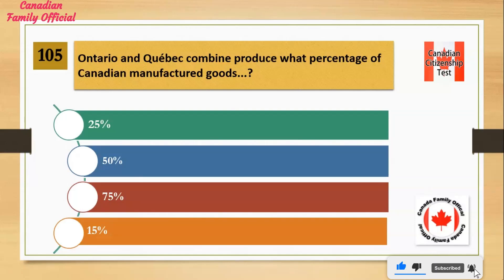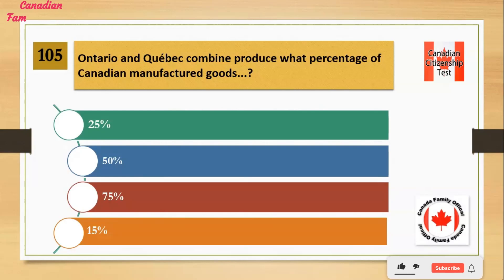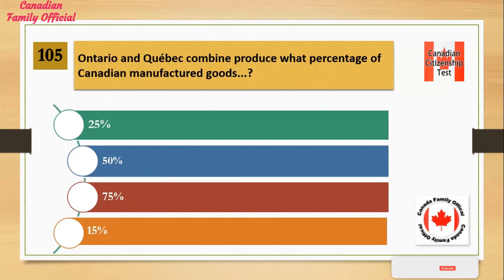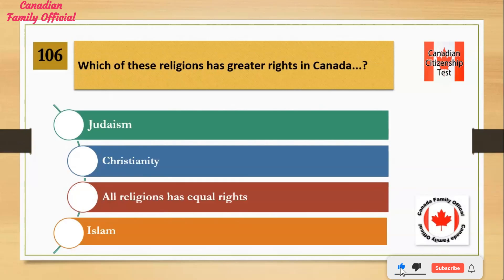Ontario and Quebec combined produce what percentage of Canadian manufactured goods? Number 1: 25 percent. Number 2: 50 percent. Number 3: 75 percent. Number 4: 15 percent. And the answer is 75 percent.